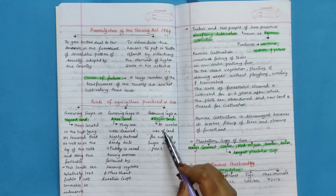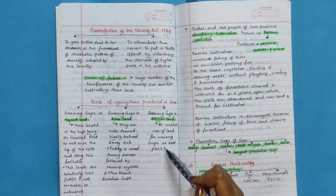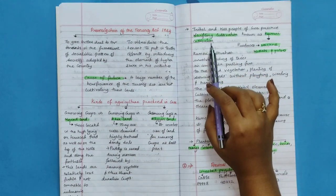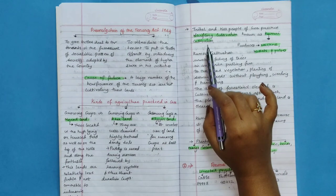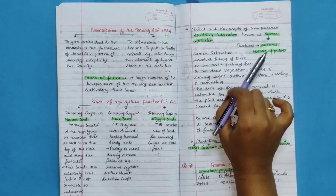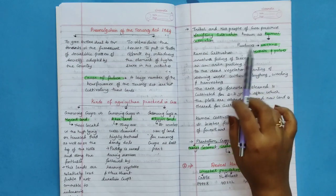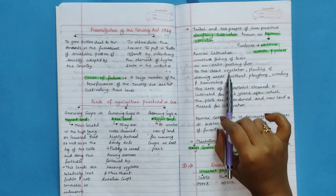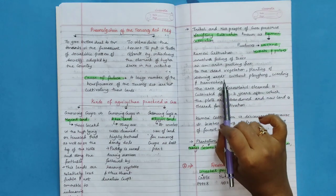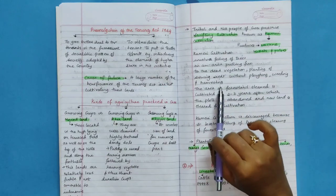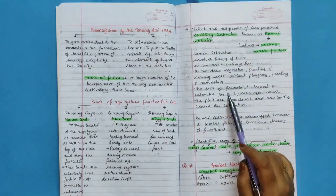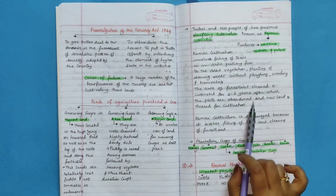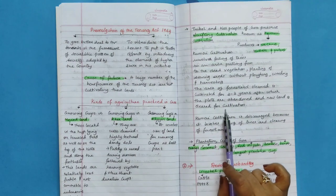Crops on Khazan land. It involves use of land for raising crops as salt pans. Tribal and hill people of Goa practice shifting cultivation known as Kumeri cultivation. Kumeri cultivation produces nachni, millet and pulses. Kumeri cultivation involves felling of trees in an area, putting fire to the dead vegetation, planting or sowing seeds without ploughing, weeding and harvesting. The area of forest land cleared is cultivated for 2-3 years after which the plots are abandoned and new land is cleared for cultivation.